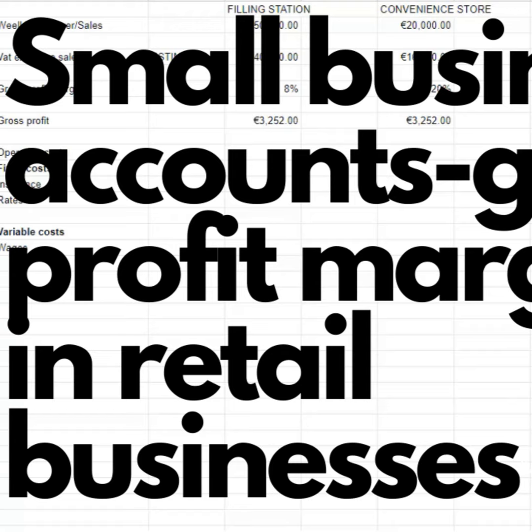Looking at the gross profit line — line number 8 here — you'll see it's actually the same for each of the three businesses. So notwithstanding the fact that one business is turning over 50 grand a week, another is turning 20, and another is turning 10, they actually all end up with the same gross profit.